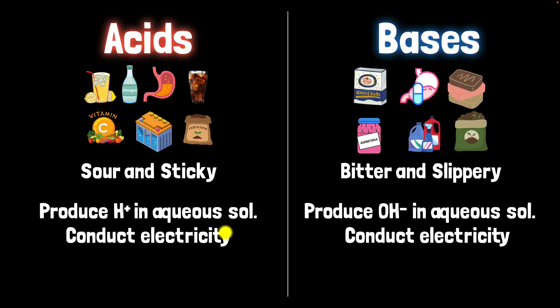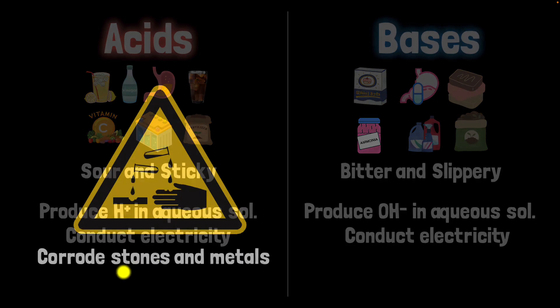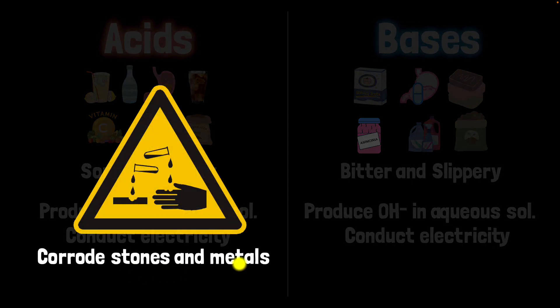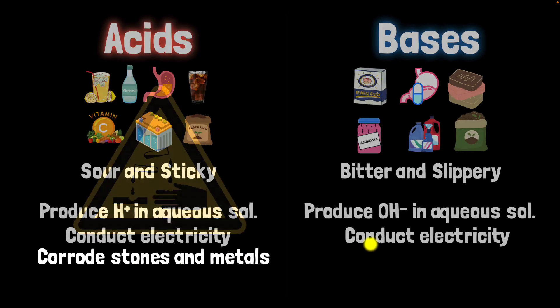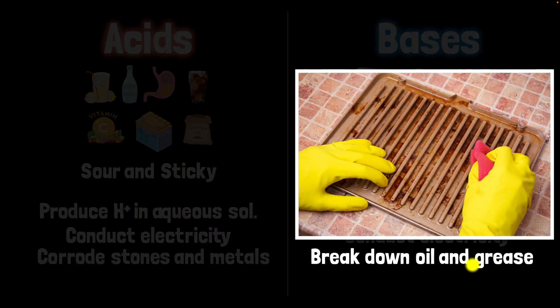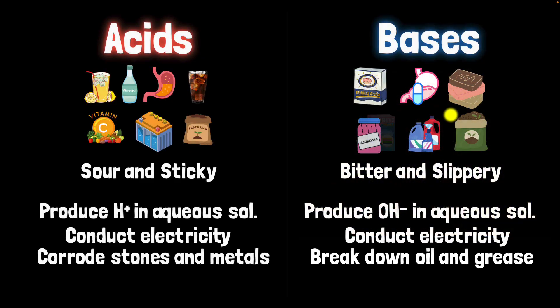Acids can also corrode stones and metals. And bases can break down oil and grease — that's why they're used in soaps and detergents in the first place. Here's a question: what do you think will happen if we mix acids and bases together?